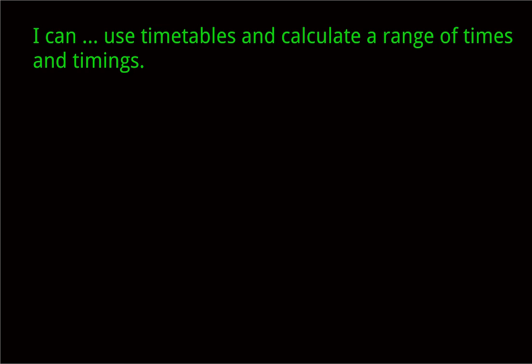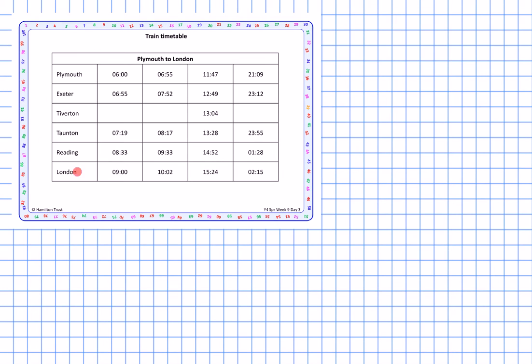In this video I'm going to talk about using timetables to calculate a range of times. When we see timetables, we're not talking about multiplication times tables — we're talking about train and bus timetables. This is an example of a train timetable for trains going from Plymouth to London, showing stops at Plymouth, Exeter, Tiverton, Taunton, Reading, and London. Some boxes are empty, meaning the train does not stop there.